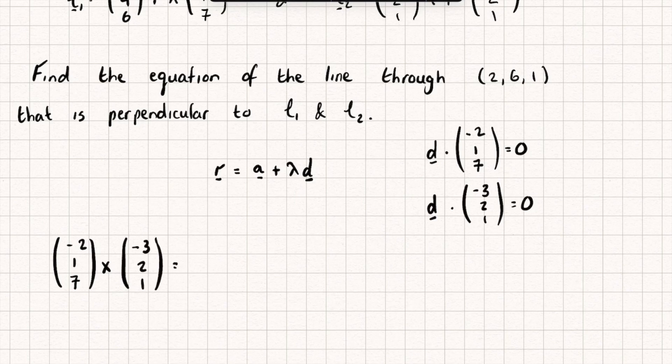And the way I'm going to calculate this is by calculating the determinant of a matrix. And the matrix is going to be I, J, K on the top row, which is my unit vectors. Then I'm going to take the second row to be (-2,1,7), and the third row to be (-3,2,1). There we go. So let's calculate the determinant.